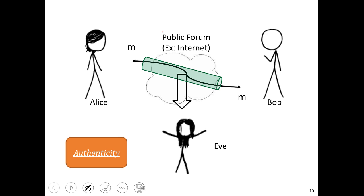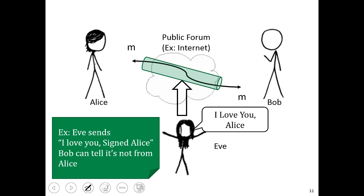A third security property is a notion of authenticity. We want it to be the case that when Alice sends a message through this cryptonium pipe and Bob gets it out, Bob can authenticate and determine this message came from Alice. For example, we don't want Eve to be able to inject a message that says 'I love you Alice' into this pipe and forge it as though it came from Alice without Bob detecting it. There are things like digital signatures which can be used for authenticity.